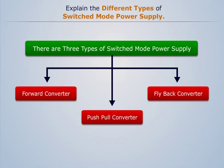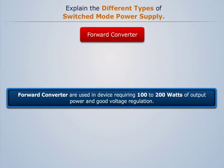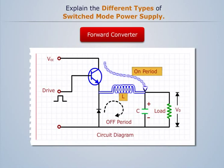Let's first discuss the forward converter. Forward converters are used in devices requiring 100 to 200 watts of output power and good voltage regulation. From the circuit diagram of forward converter, we can see that here chokes carry current whether the transistor is conducting or not.